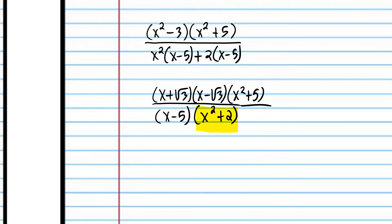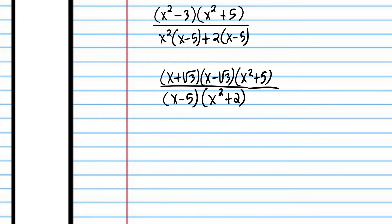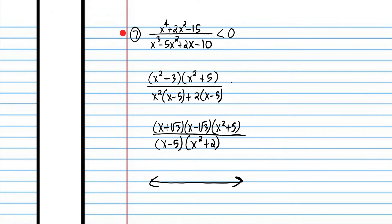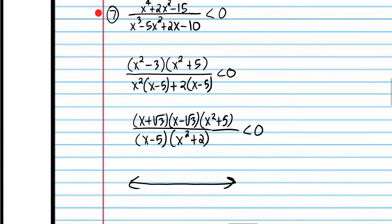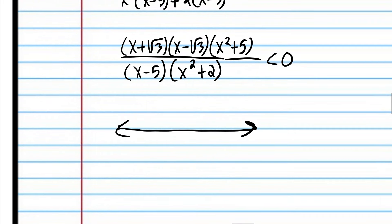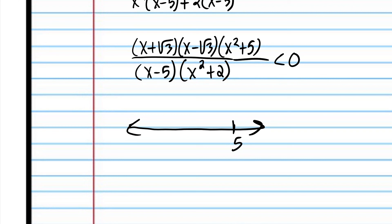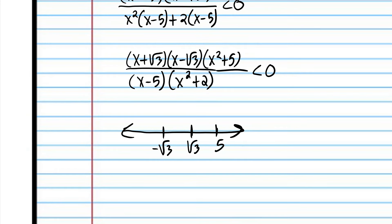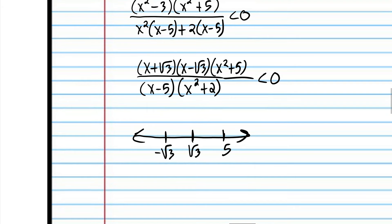We need imaginary numbers for the yellow and blue factors to make them zero, so we don't have to worry about the sum of two squares. We're ready to do our number line. We have five, and we have root 3 and negative root 3. The spacing doesn't have to be perfect — we just want to know the sign of the intervals.